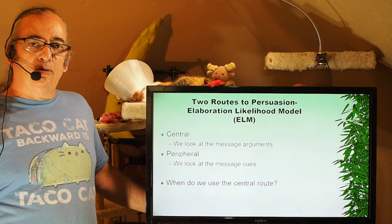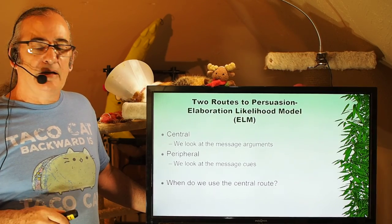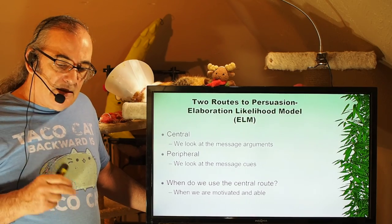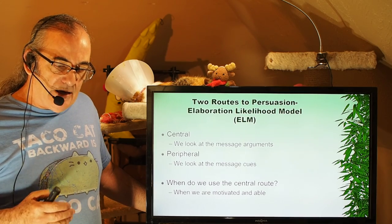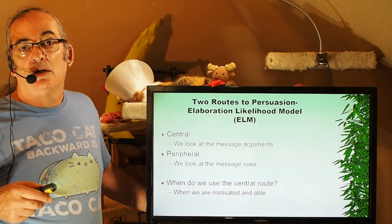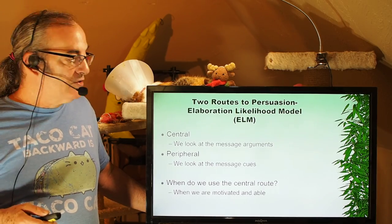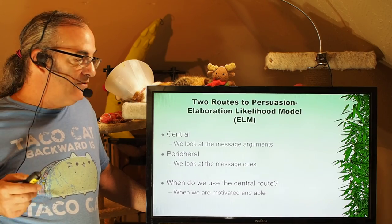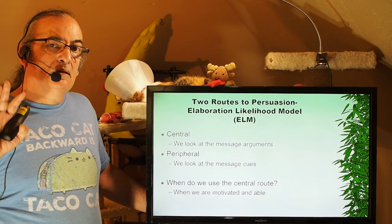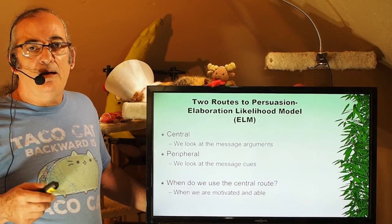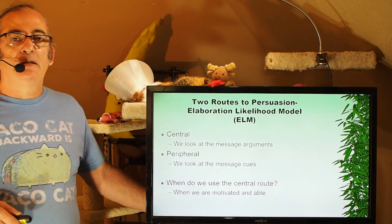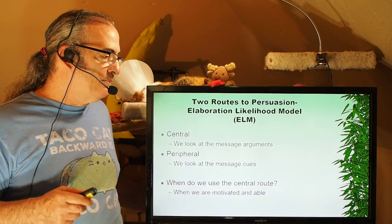So we have two paths to creating a persuasive argument that can appeal to multiple audiences. When do we typically use the central route? When we're motivated and able. If we're motivated to process the information — if it's an important decision — then we're likely to engage in processing central arguments. But if we're under time pressure, distracted, or other things are going on, we might not have the ability, and the peripheral route is the better route at that point.